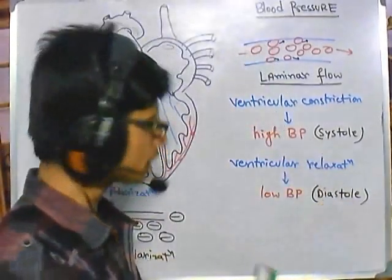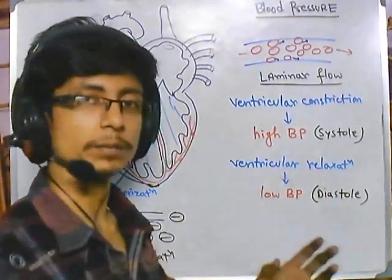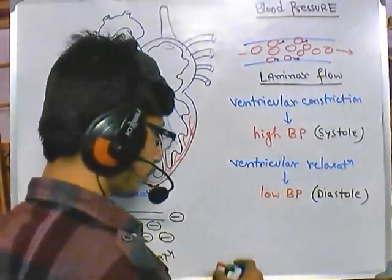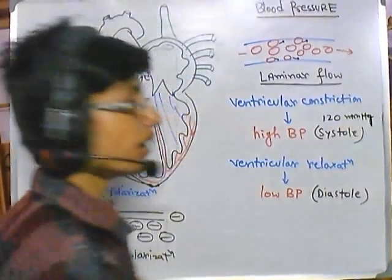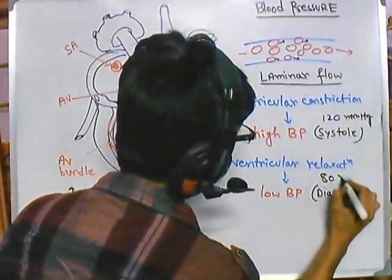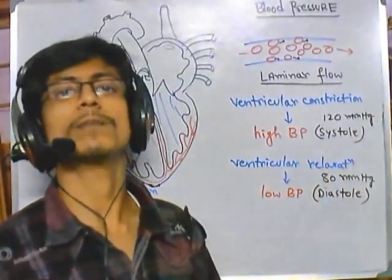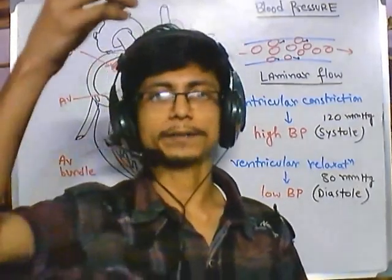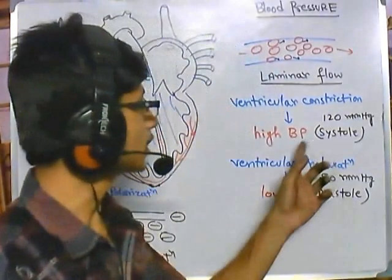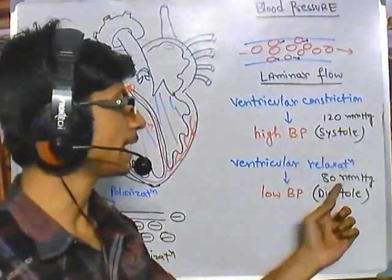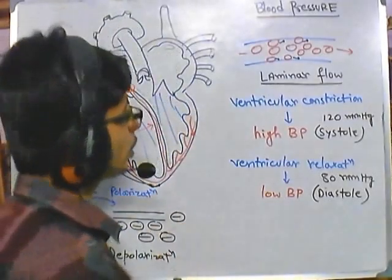The pressure generated during systole is called systolic pressure, and the pressure generated during the diastolic or ventricular relaxation phase is called diastolic pressure. The systolic pressure is higher — for a normal human being the systolic pressure is equivalent to 120 millimetres of mercury and the diastolic pressure is approximately 80 millimetres of mercury. This means a 120 mm long tube of mercury creates pressure equivalent to systolic blood pressure, and an 80 mm tube is equivalent to diastolic pressure.